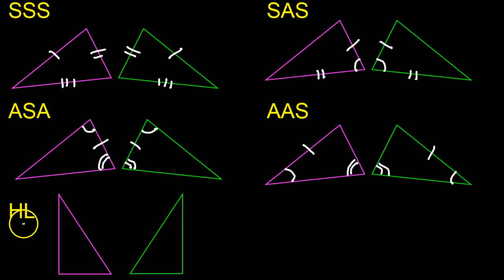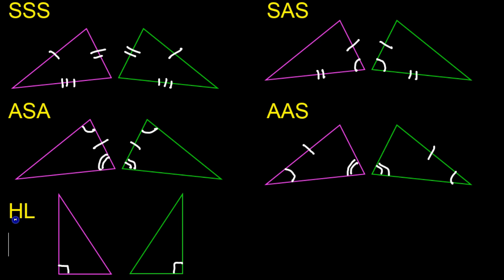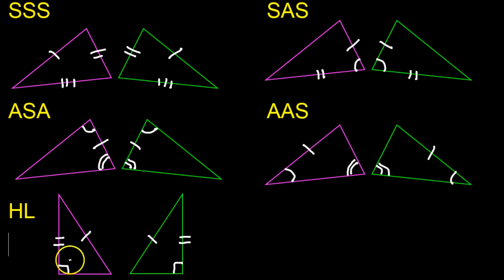Let me squeeze this last one in. HL stands for hypotenuse leg. Only a right triangle has a hypotenuse, so we need to make sure that we are talking about right triangles if we are going to prove them congruent by hypotenuse leg. Hypotenuse means that you have to have a pair of hypotenuses that you know are congruent — the hypotenuse being the side across from the 90 degree angle. The other sides are called legs, so you need a hypotenuse and a leg of a right triangle. For example, if I knew that this side was congruent to this side, that's a hypotenuse and a leg congruent to a hypotenuse and a leg, which would be enough to say the triangles are congruent by hypotenuse leg.